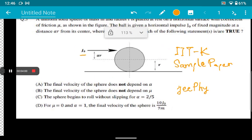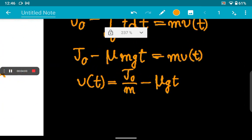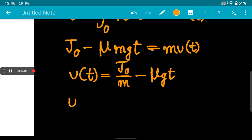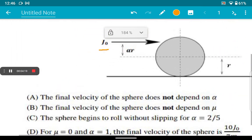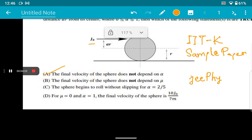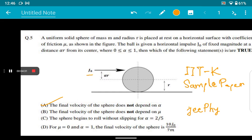Let's just look at the options. Option A: the final velocity of the sphere does not depend on α. Very clearly the final velocity vf will be just J₀ by m minus μgtf. So this option is very much correct. There is no α term in the expression of velocity.